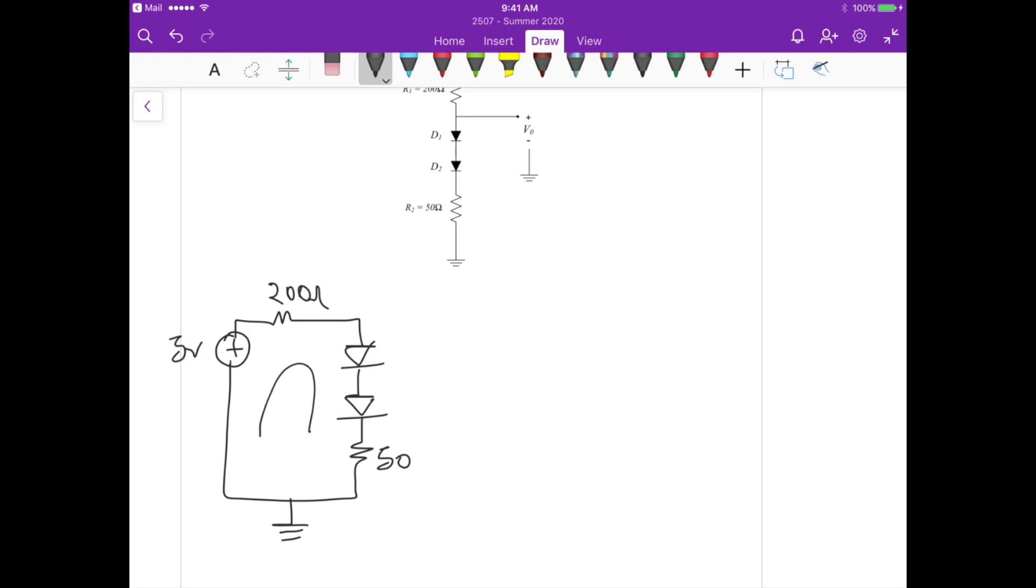So if we apply a KVL here we find that the current that's flowing through the diodes, this current here id, is equals to 5 volts divided by 250 ohms and this gives us 20 milliamperes.